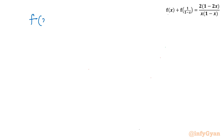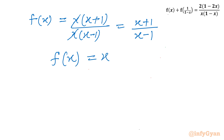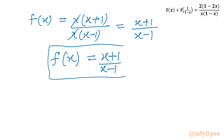So f(x) equals: taking x common in the numerator gives x(x+1) over x(x-1), and x cancels. Our answer is f(x) = (x+1)/(x-1). So ultimately we have calculated f(x) = (x+1)/(x-1). This will be our functional value, and x cannot be equal to 1.